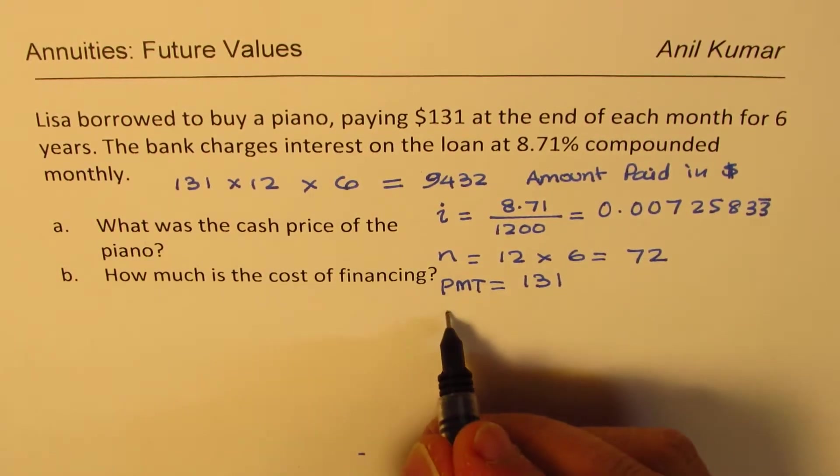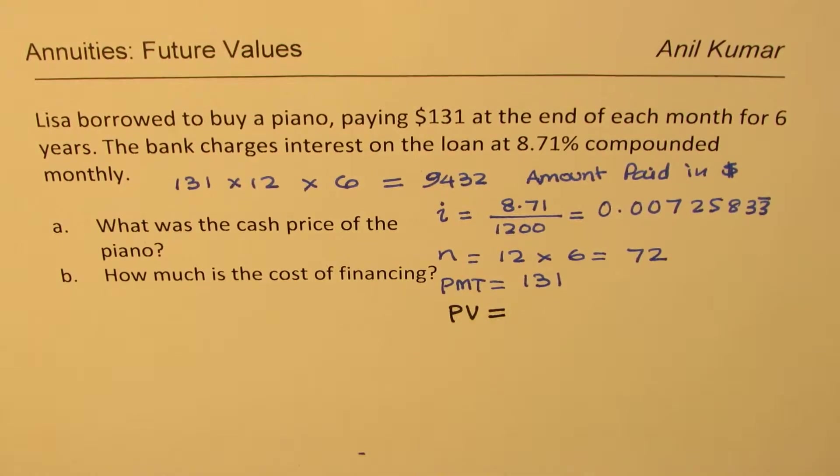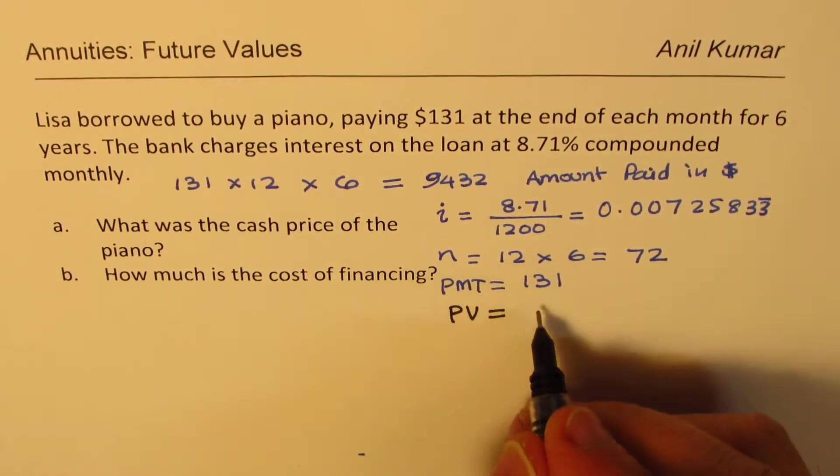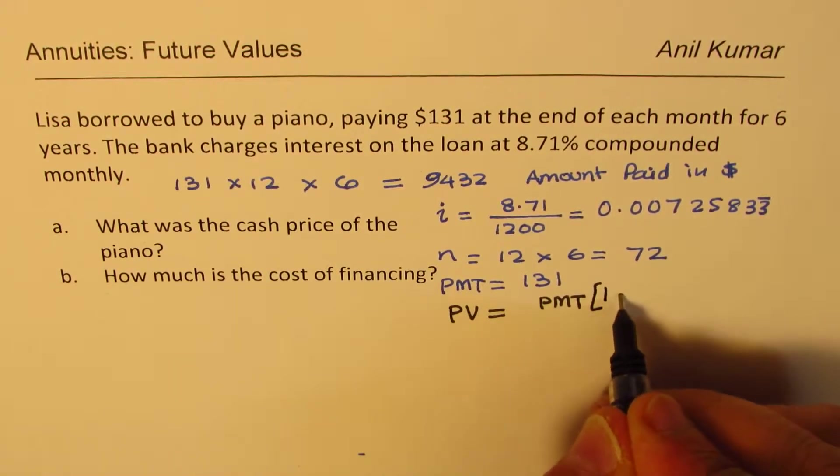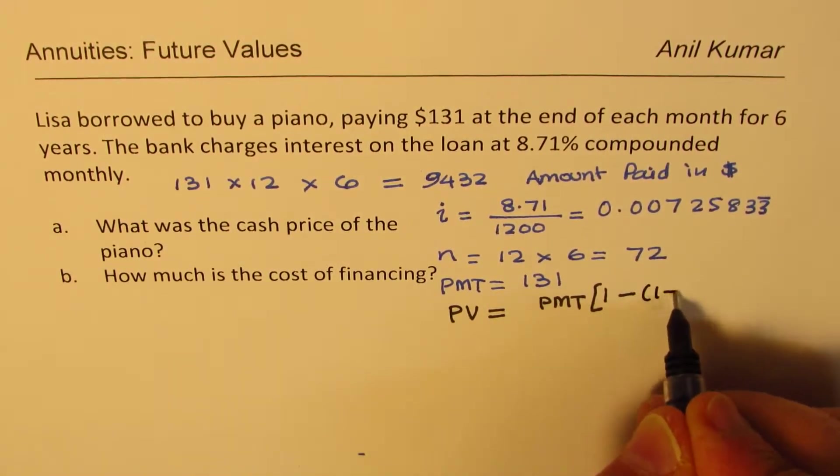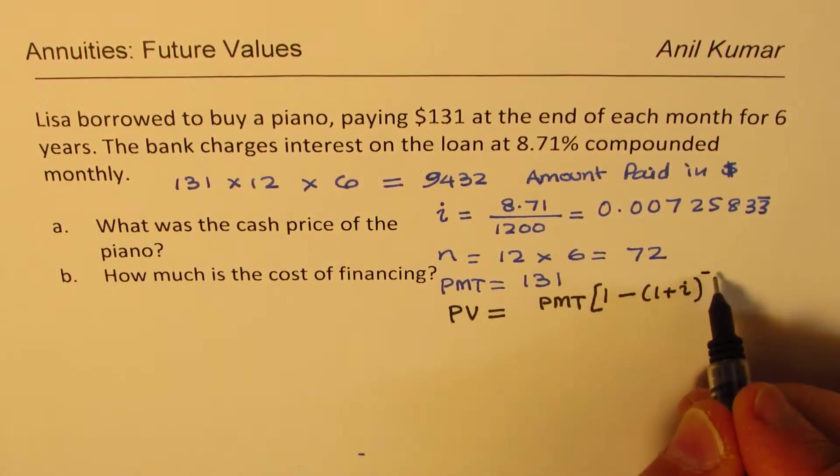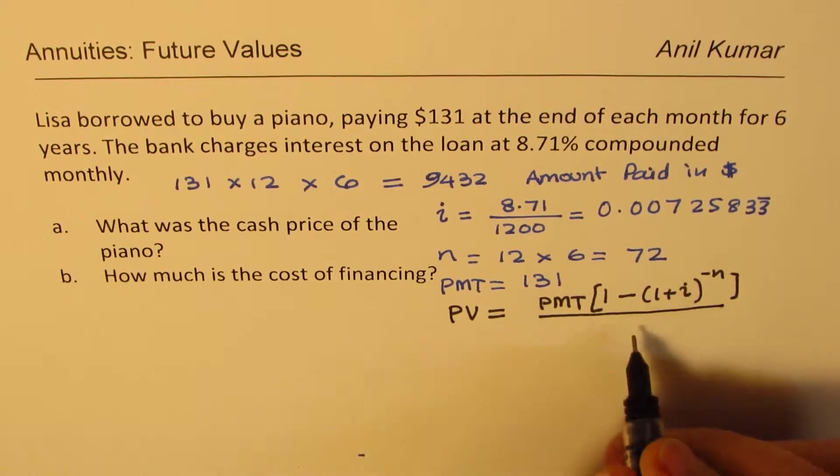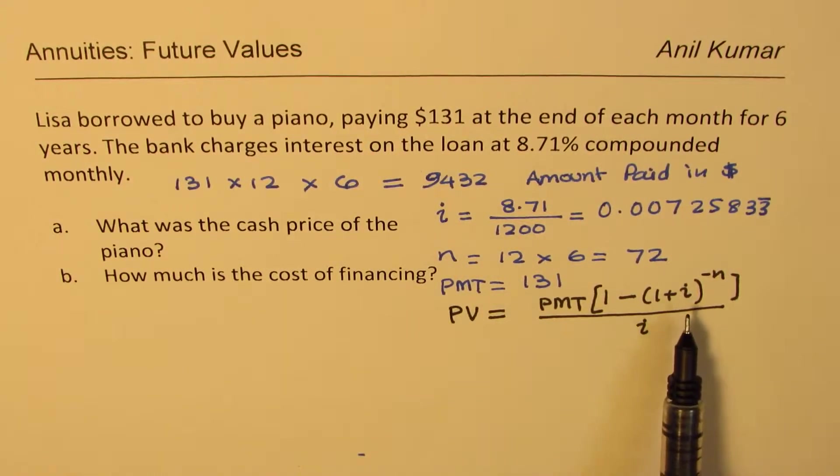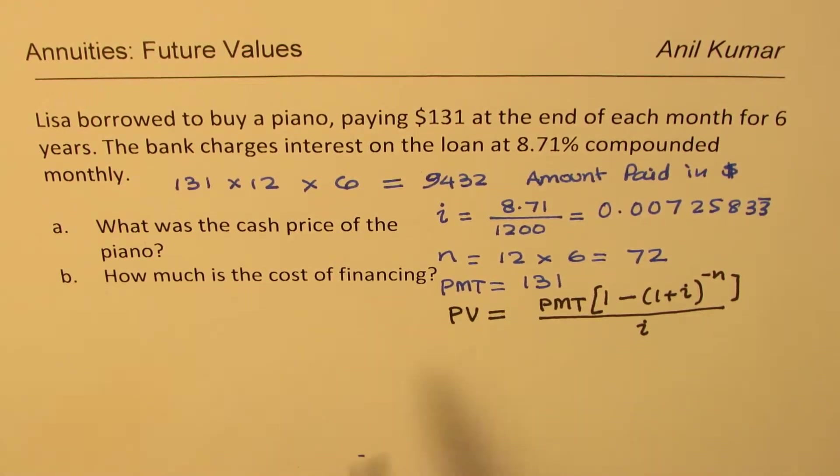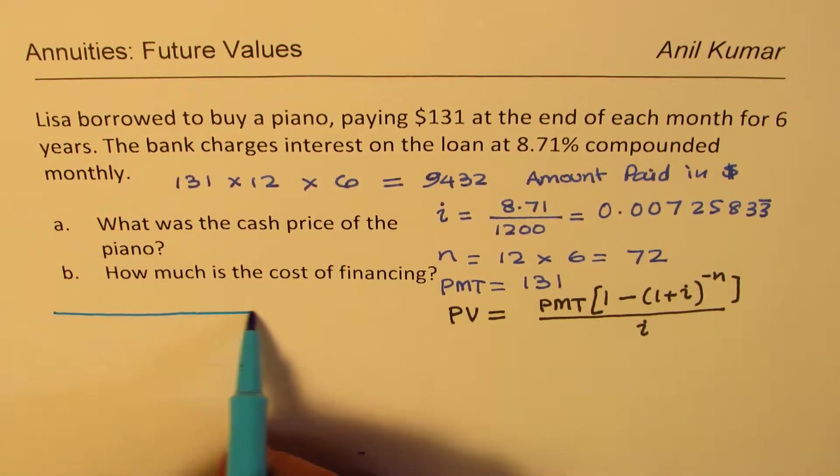So let's write down the formula for present value. And then we'll continue from there after understanding a bit more about it. So present value formula is per month whatever you're depositing into 1 minus 1 plus i to the power of minus n divided by i. Correct. So that is your formula.